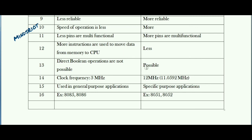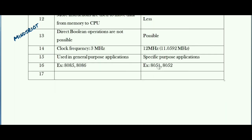I recommend concluding differences between anything by examples and applications. Applications of microprocessor, as it is used in general purpose applications, include personal computers and mobile phones. Microcontroller is used in specific purpose applications — applications of microcontroller include washing machines, MP3 players, digital cameras, microwave ovens, etc.